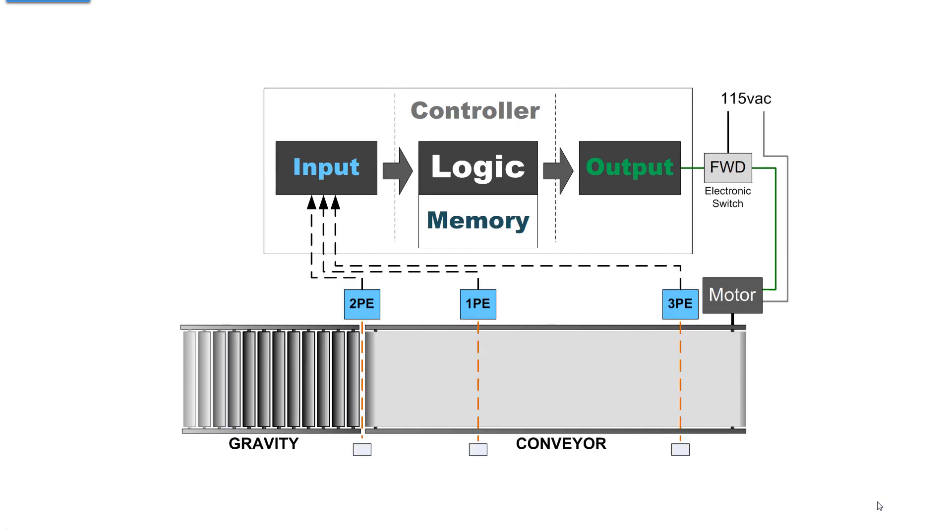The current logic is limited to running the conveyor forward until the photo eye is blocked since it's an object. If you want to do more with the programmable logic controller, then you have to give it more instructions. To give it more instructions, you have to give it more information. Here we've expanded our input to three positions on the conveyor belt.